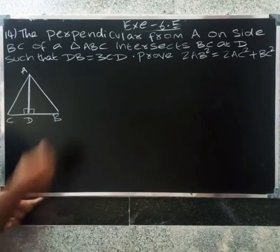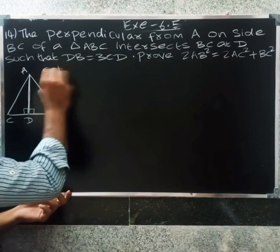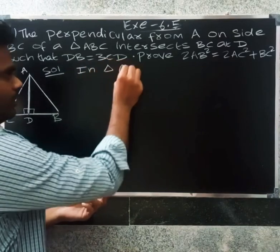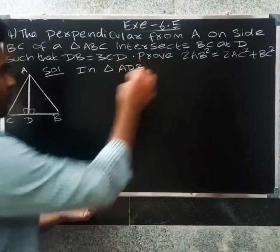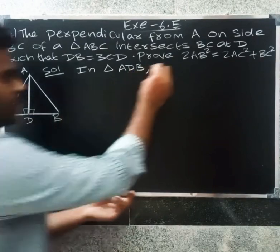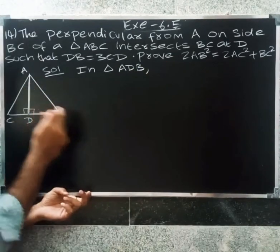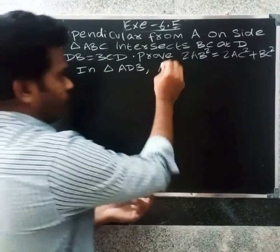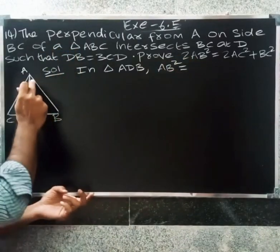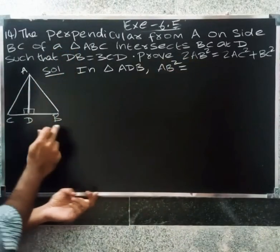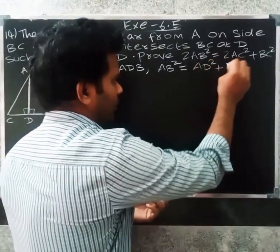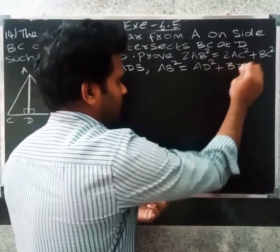First, in triangle ADB, we will prove: AB square equal to AD square plus BD square.